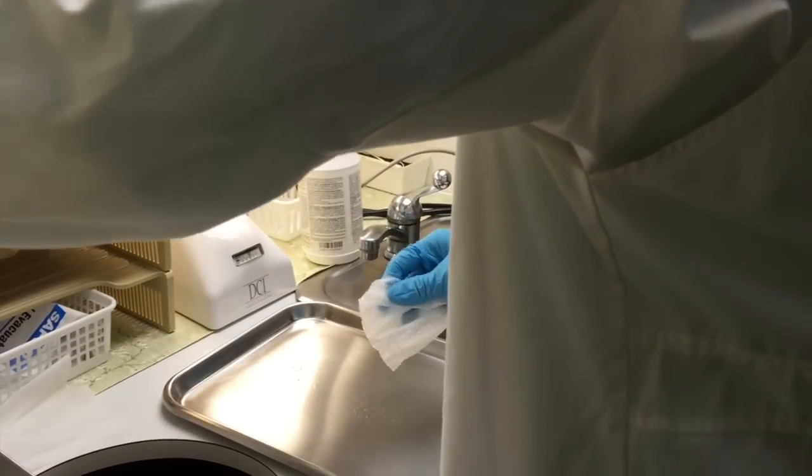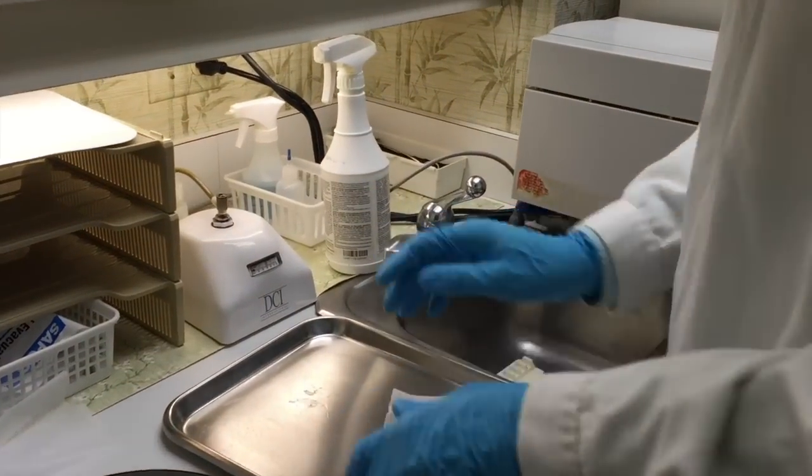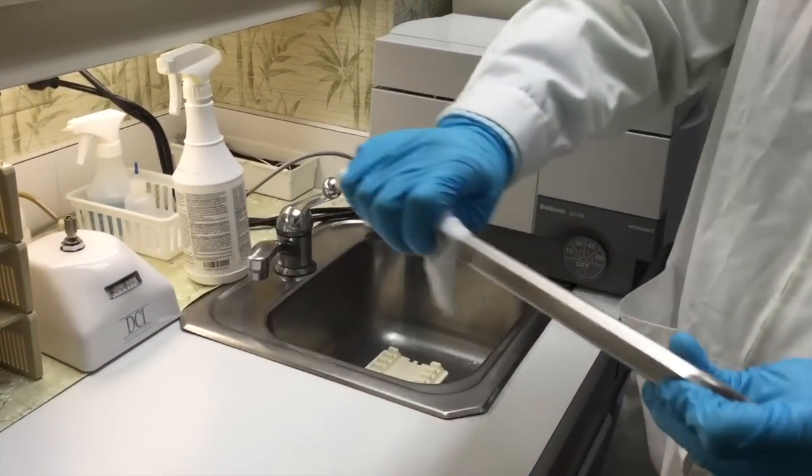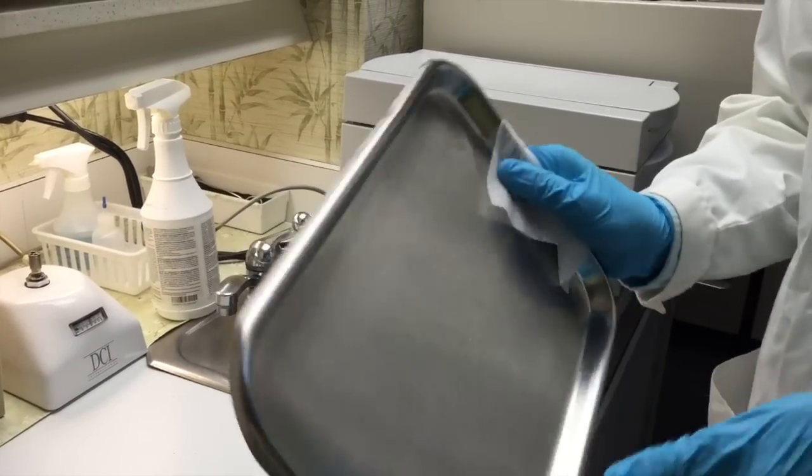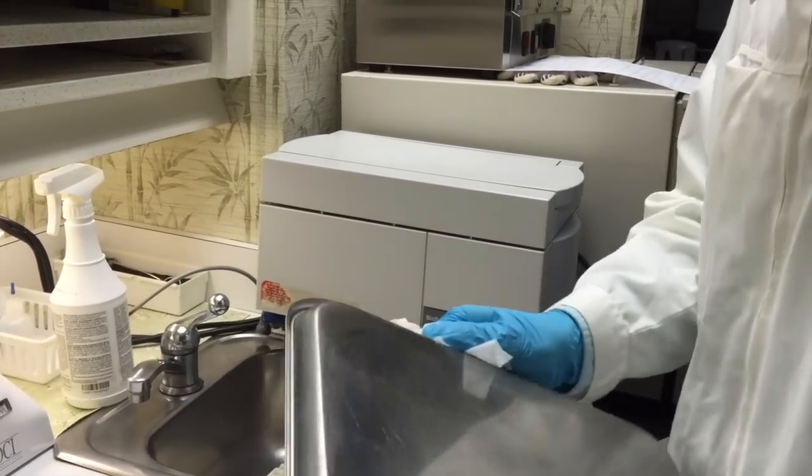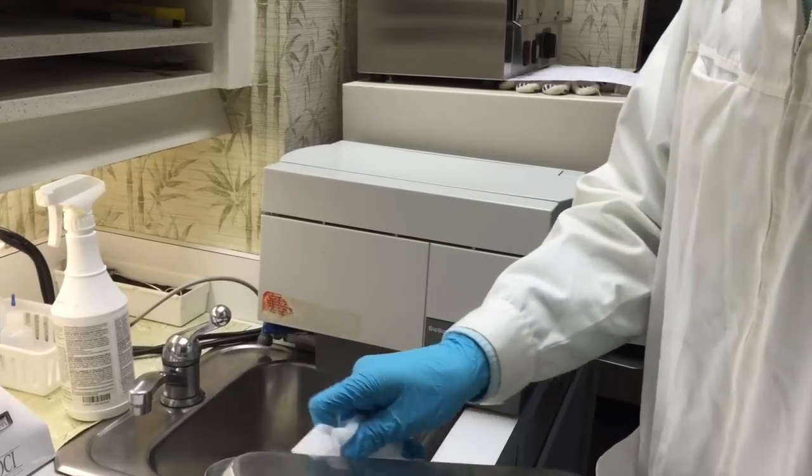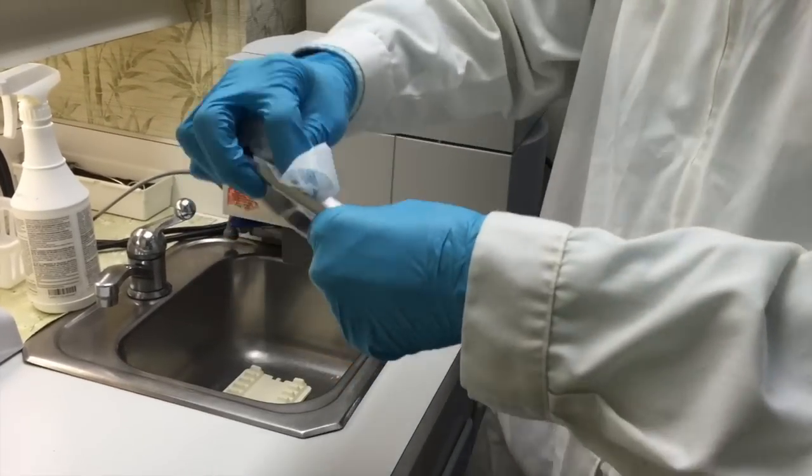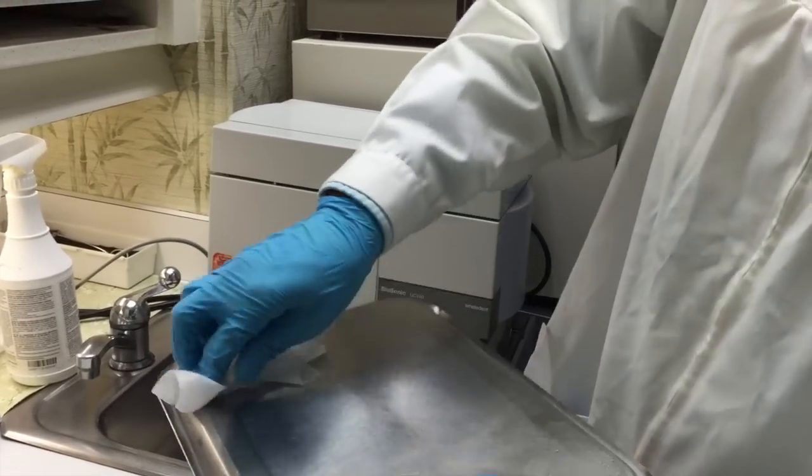We're going to wipe down the tray with a disinfectant wipe. When you do this, you've got to be extra careful because you've got to get all the sides of this. This was sitting near where the dentist was working and there could be any kind of spit that could have flown up on it. So you're going to have to get all the sides, get all the crevices, even where you wouldn't think you'd normally have to clean. You have to completely disinfect the tray. Make sure you get all the edges up under here.